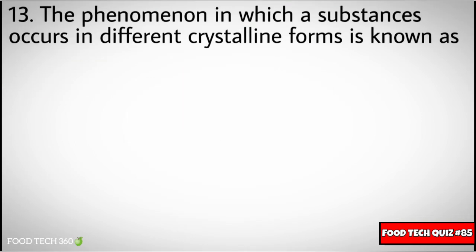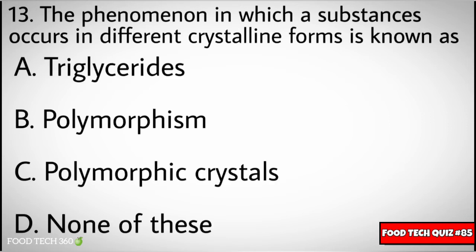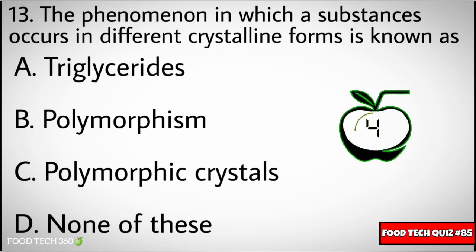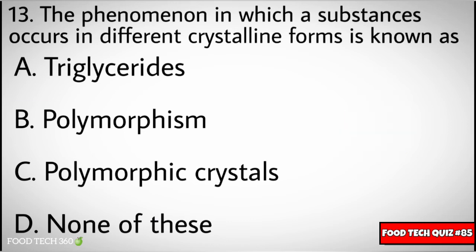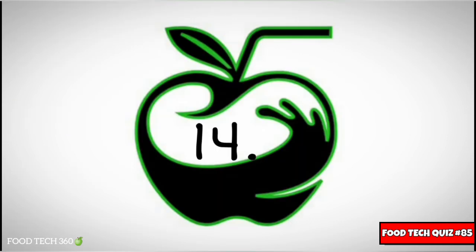Question number thirteen: the phenomenon in which a substance occurs in different crystalline forms is known as. Options: A) triglycerides, B) polymorphism, C) polymorphic crystals, D) none of these. Correct answer: B) polymorphism.